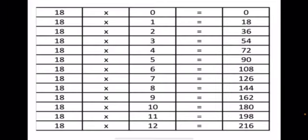18 zeros are 0. 18 ones are 18. 18 twos are 36. 18 threes are 54. 18 fours are 72. 18 fives are 90. 18 sixes are 108.